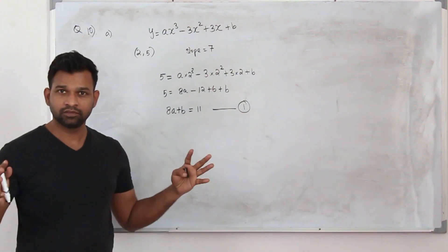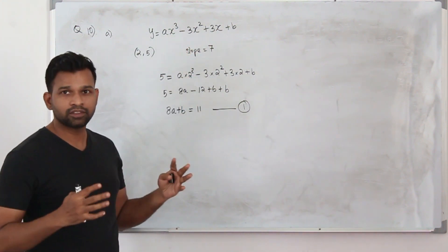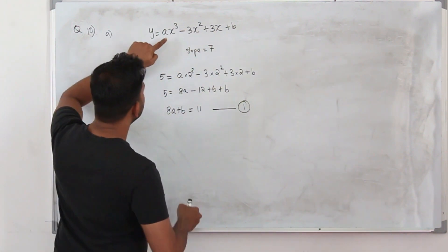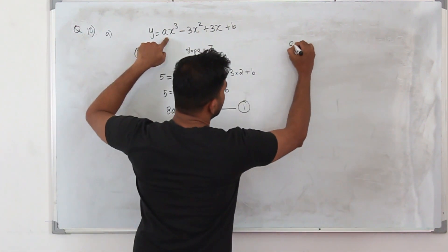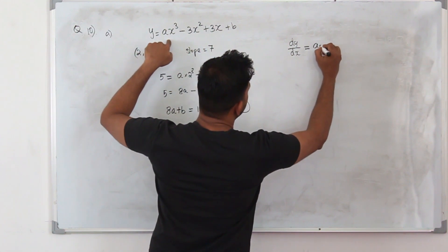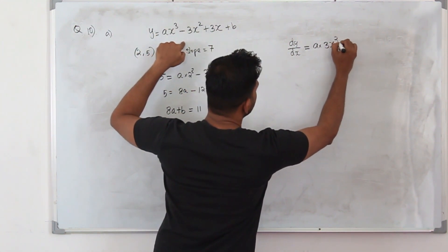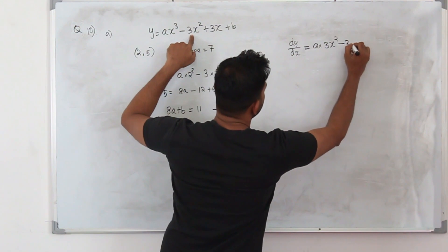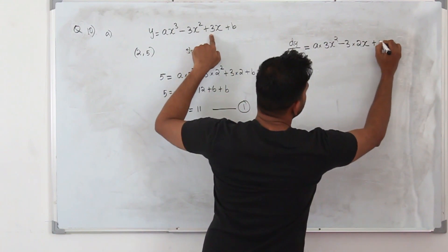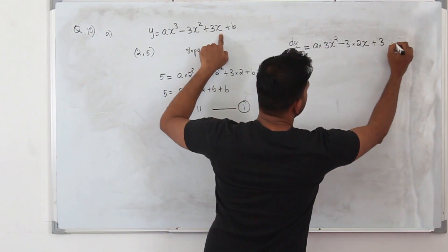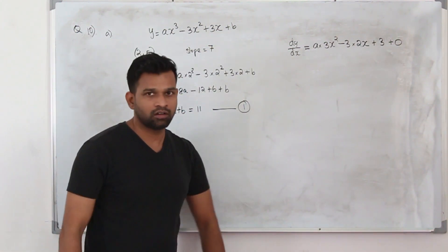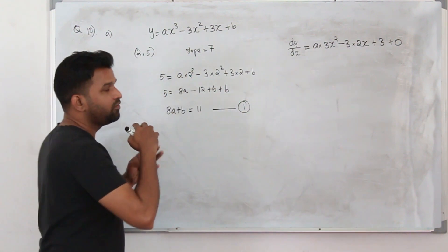We are given a function — a cubic function. Whenever they mention the gradient of a function, you need to find the first derivative with respect to x. So differentiate: ax cubed becomes 3ax squared, and the constant b will become 0. That is the gradient function.